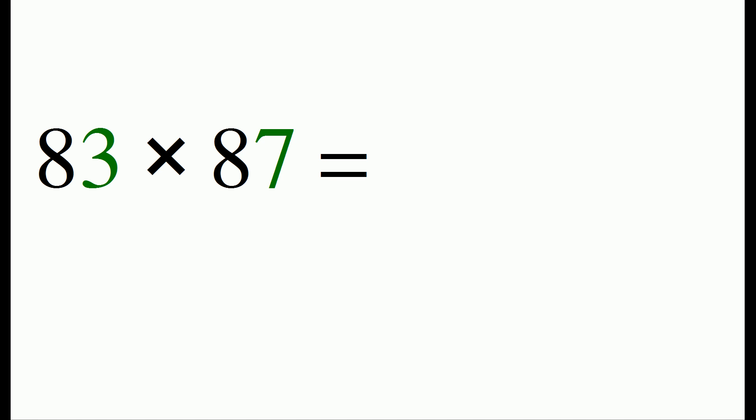So let's do 83 times 87. This multiplication problem works because 3 plus 7 is 10 and the tens digit of 8 is the same between the two numbers.